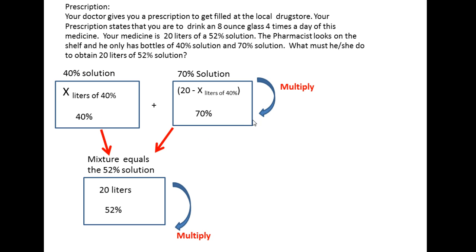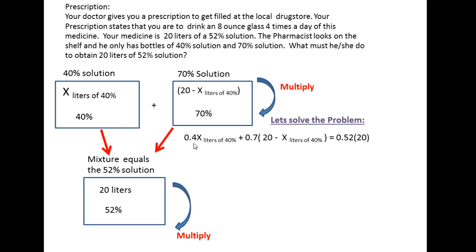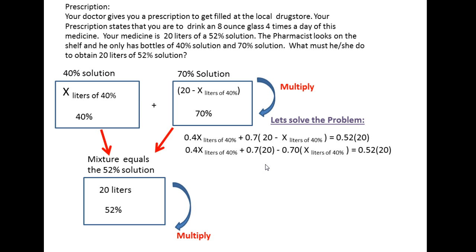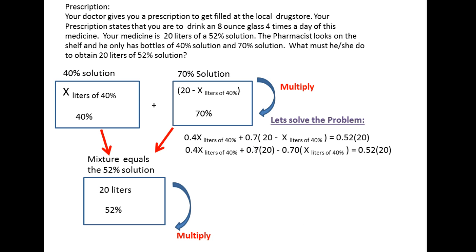Now let's solve the problem. We're going to say 40 percent times x — changing that to decimal form: 0.4 times x — plus 0.7 times (20 minus x) liters of 70 percent solution, and that equals 52 percent of the 20-liter mixture, which is 0.52 times 20. Then we multiply through: 0.7 times 20.